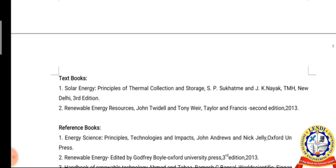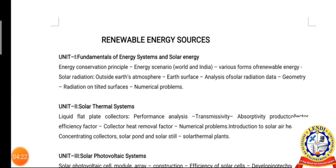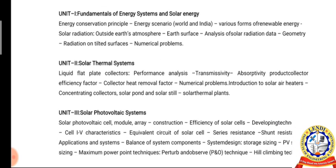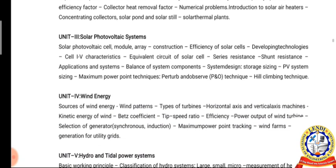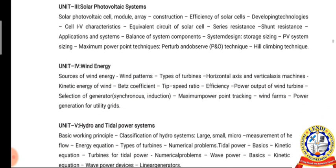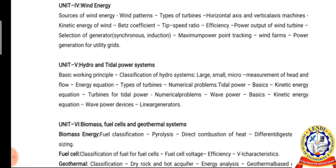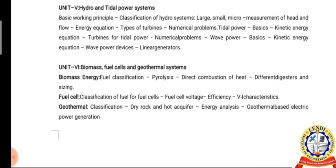Unit 5: Hydro and Tidal Power Systems. Unit 5 covers the concepts of different hydropower systems, including working principles and classification of hydropower systems, head and flow measurements, energy equations, hydro turbines, and different turbine types used in hydro systems. It also covers kinetic energy equations of tidal and wave power generation, and related problems.